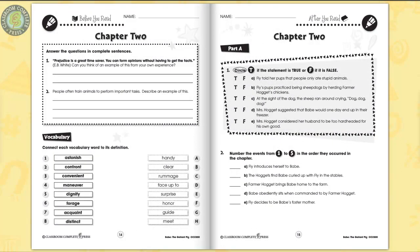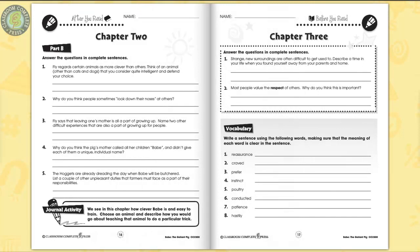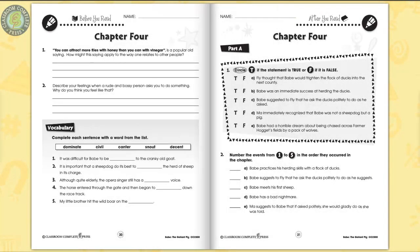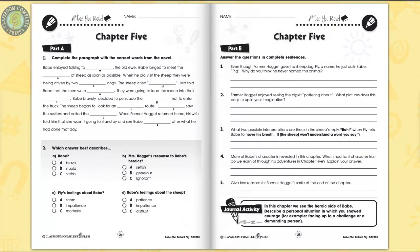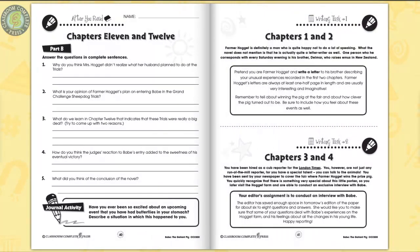Students explore the concept of prejudice and give an example of this from their own experiences. Write sentences using the vocabulary words from the story. Identify statements about Babe herding ducks as true or false. Brainstorm reasons why farmer Hoggett never named his pig. Six additional writing tasks follow.